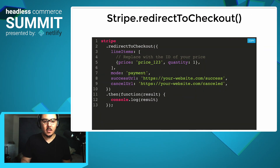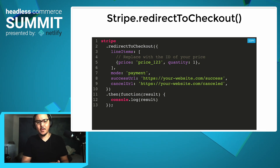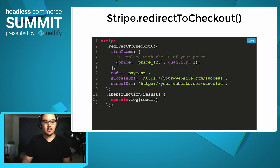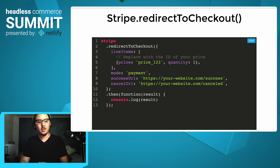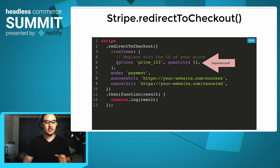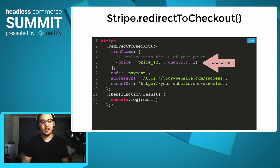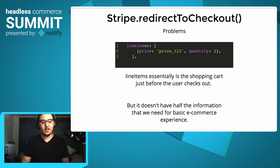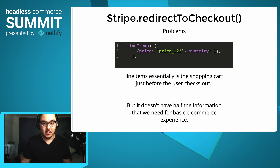Stripe's object gives you a method called redirectCheckout. You can see that this is what you need to successfully take a user to checkout. What's really important here is line items and the objects inside line items — there's a price, which represents the price ID, and then there's the quantity of the product. There's a problem here though: this just does not have even half of the information you'll need for a basic e-commerce experience.